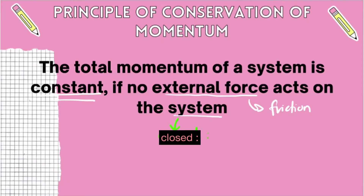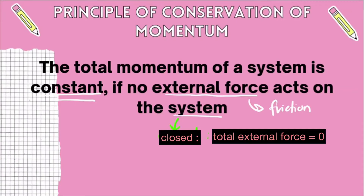What exactly is a closed system? A closed system is a system in which the total external force acting on it is equal to zero, which means there must be no friction applied to it — or if there is friction, there has to be an equal external force in the opposite direction to counteract it. This principle is applied to two situations: collision and explosion, and we will discuss those two situations next.